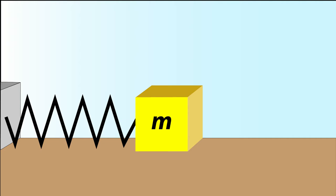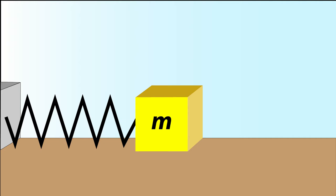Imagine a frictionless surface with a mass like this box resting on it. Attached to the mass is a spring, which is also fastened to the wall. The spring has a particular elastic constant called k, which is a measure of how much force is needed to stretch or compress the spring by one meter.